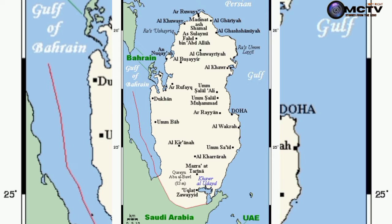Located in the continent of Asia, its coordinates are 25.3 degrees north, 51.15 degrees east. By area, it is ranked 164th with a total of 11,571 km square. By land, it is 100%, and by water, it is 0%.